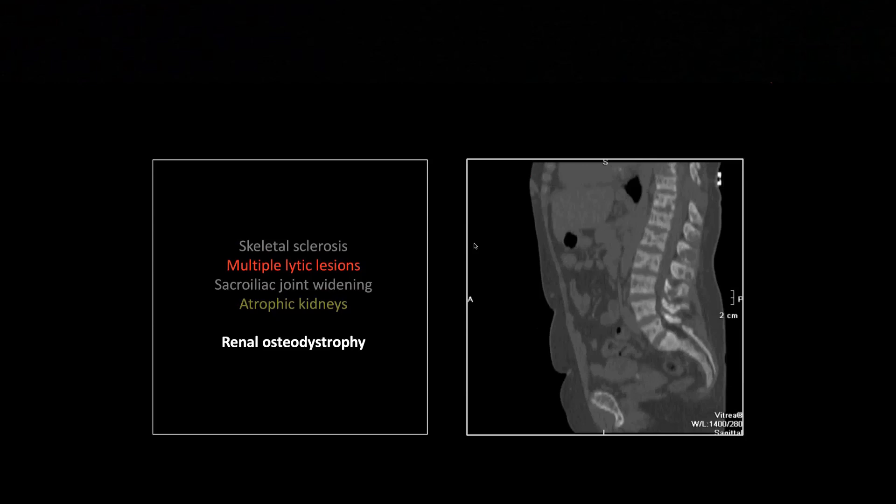Honestly, that one is tough to pick up on plain film. I've only got one or two plain films from my whole 30-year career that really convincingly show a rugger jersey spine, and even on CT it's really not that apparent. This is the area where that brown tumor was developing in the posterior elements, and on the sagittal it has almost completely replaced the posterior elements, spinous process, and pedicles at that vertebral level.